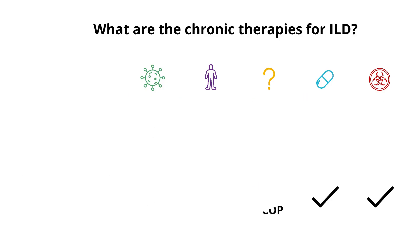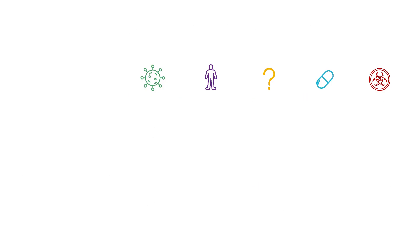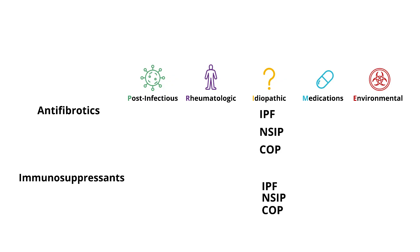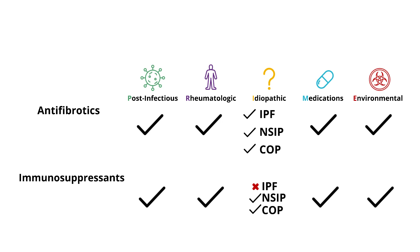So altogether, let's bring it all together. We have five clinically relevant categories of ILD — PRIME: post-infectious, rheumatologic, idiopathic, medication-induced, or environmental exposure. Within idiopathic, we have subtypes including IPF, NSIP, and COP. Chronic management of ILD includes antifibrotics and immunosuppression. Antifibrotics such as pirfenidone and nintedanib can be considered in all patients with progressive fibrosis, no matter the category. Immunosuppressive agents such as mycophenolate and azathioprine should not be given to patients with IPF, but can be considered for all other categories of ILD.